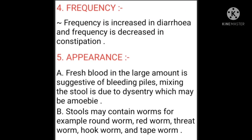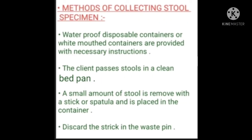Watery stools are found in diarrhea. Pea-soup stools are typical of typhoid fever. Frequency is increased in diarrhea and decreased in constipation. Fresh blood in large amounts is suggestive of bleeding piles. Blood mixed in the stool is due to dysentery, which may be amoebic. Stools may contain worms, for example roundworms, redworms, threadworms, hookworms, and tapeworms.